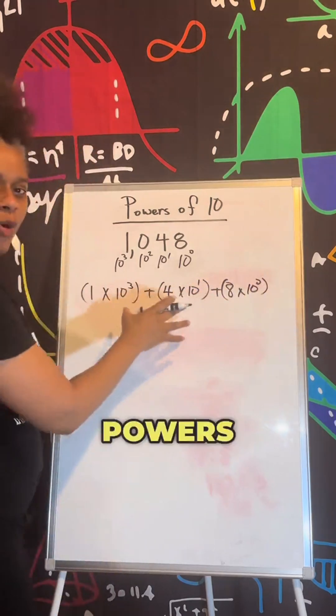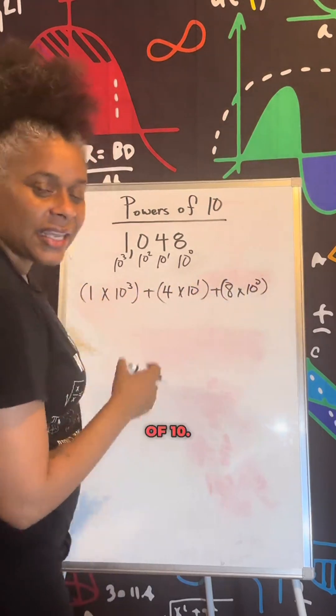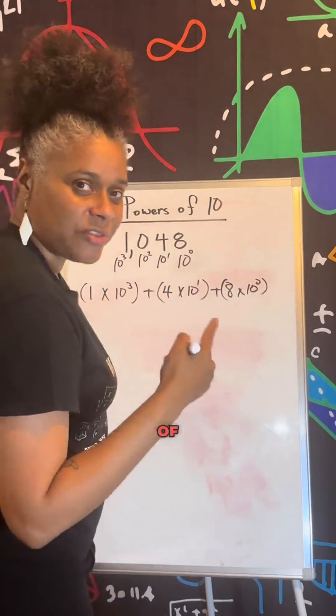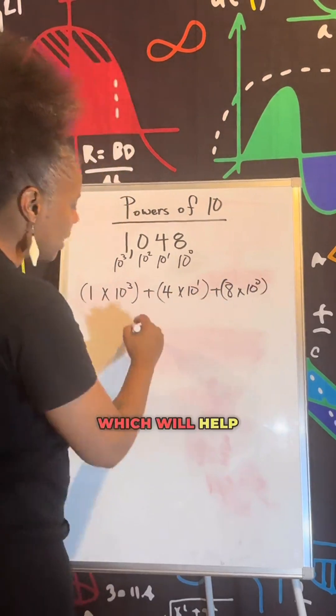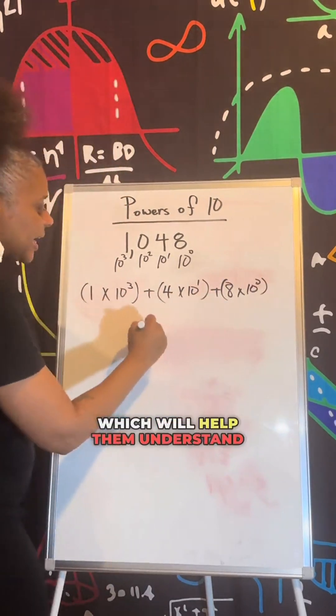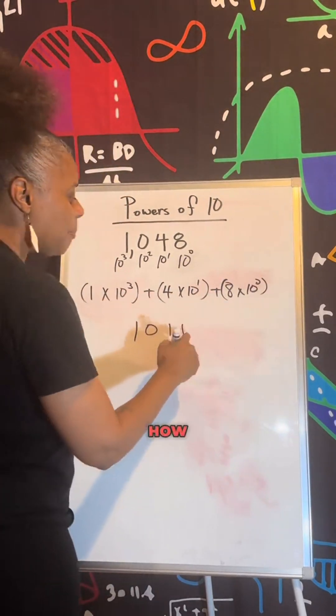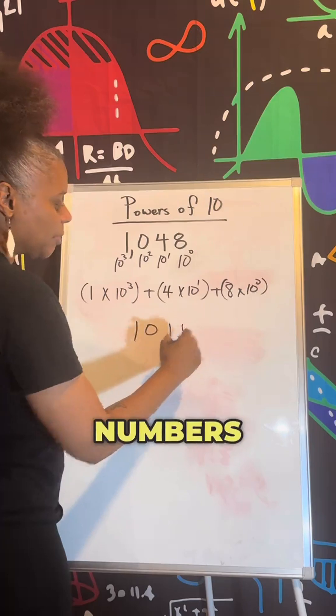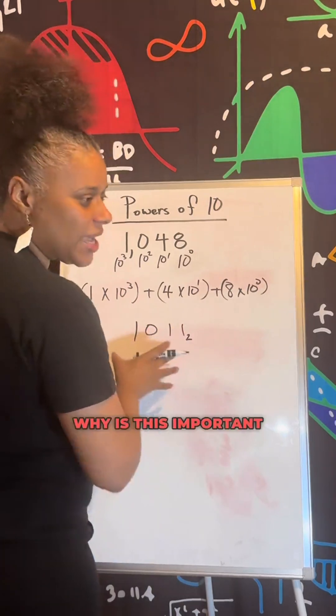These are powers of 10. That is an understanding of place value, which will help them understand how binary numbers work. This is base 2.